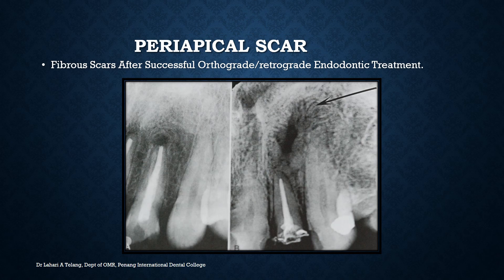Periapical scar is the term given to a fibrous scar after successful orthograde or retrograde endodontic treatment, specifically in cases of apicectomy where the apex of the tooth has been treated following root canal treatment in cases of periapical lesions treated through retrograde endodontic treatment. The area eventually heals; the tooth is no longer infectious, but the bone pattern that forms after this minor surgical procedure is called a periapical scar, and it may remain evident on radiographs for a very long time without much bone remodeling occurring.